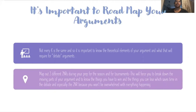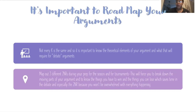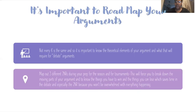First, it's important to roadmap your arguments. Not every critique is the same, so it's important that you know the theoretical elements of your argument and what that will require for debate. There's a difference between the book that has all the information the author had — not in the context of debate, but in the context of phenomenological, sociological, and historical conjectures — and how you are connecting that to a debate round. Knowing the different theoretical implications and grounding it in the link debate, the framework debate, the theory debate, the alternative debate, the permutation debate — all of that is going to be helpful for how you incorporate your own personal voice and innovation into critical style debate.